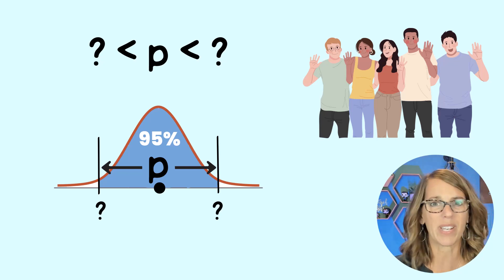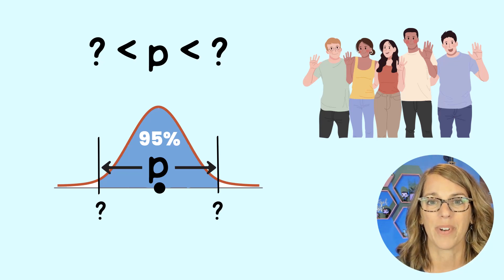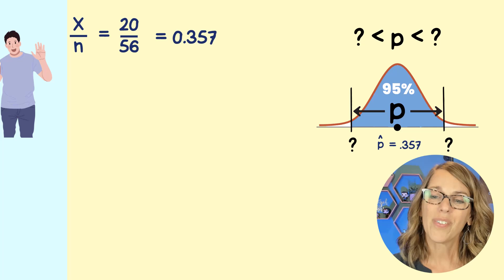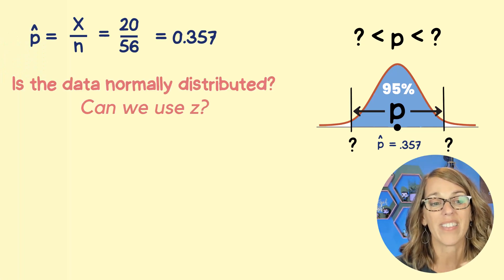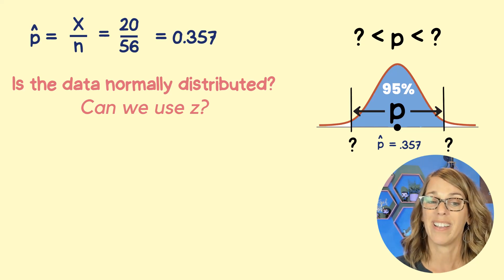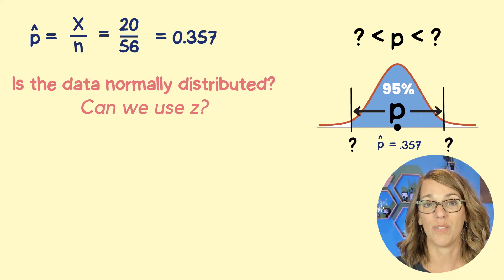So P is between what and what is really what we're coming up with. So the normal curve would be really helpful here, but we first need to verify that our data is normally distributed and can we actually use Z.